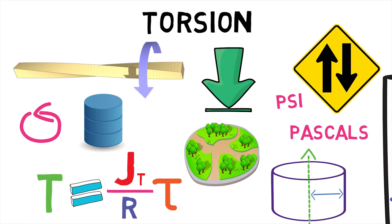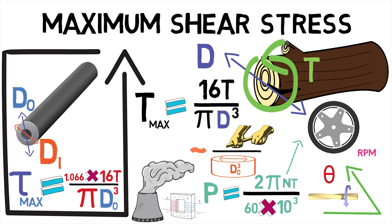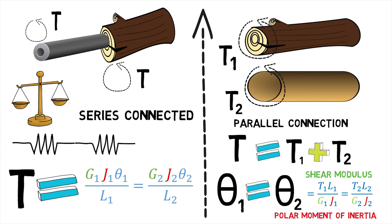Hence, we first saw what torsion is, then saw how stresses occur in hollow and solid shafts, and finally saw how shafts are connected in series and parallel.